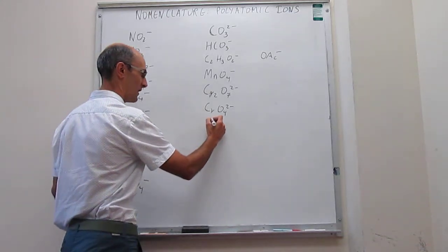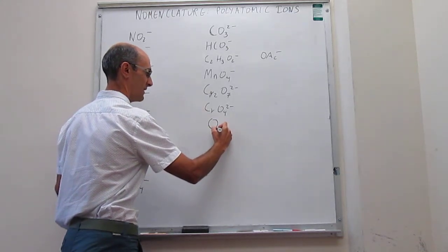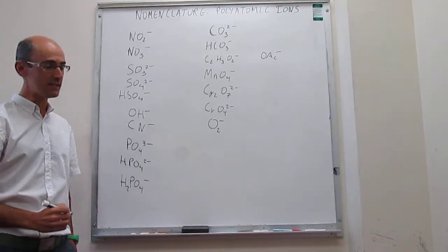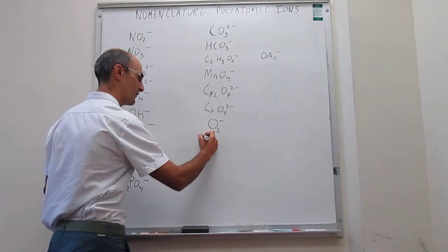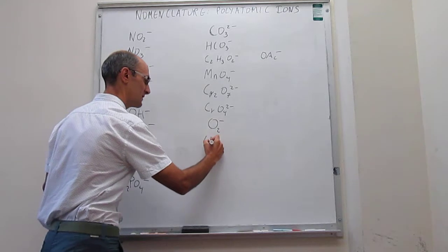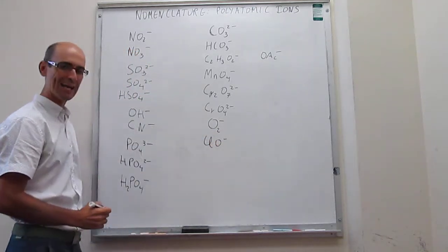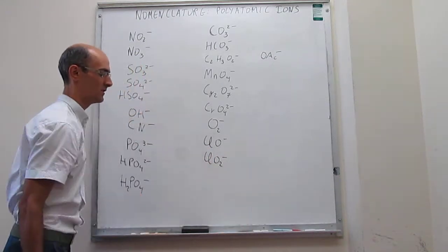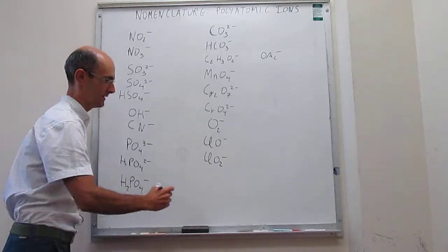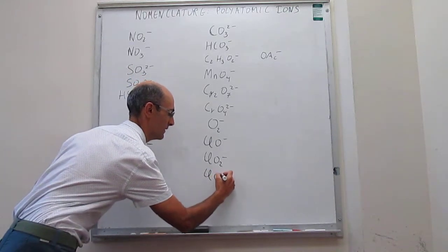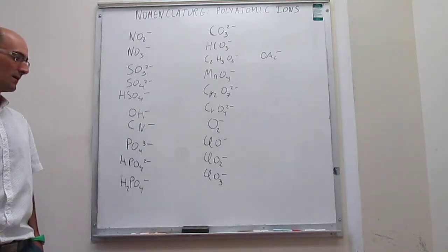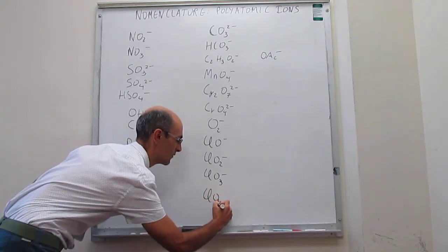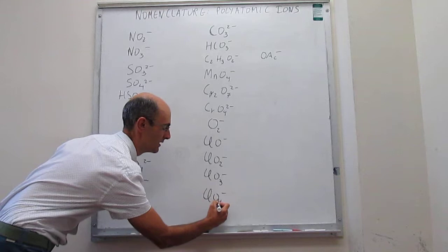We are almost at the end here. Then we have O2-2- which is called peroxide, and then we have the last four, which are ClO-, which is hypochlorite, ClO2- which is called chlorite, ClO3-, which is called chlorate, and then ClO4-, which is called perchlorate.